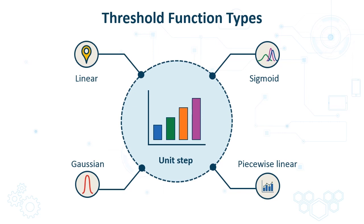Piecewise linear is a third type of threshold function, where the output is directionally proportional to the weighted output.